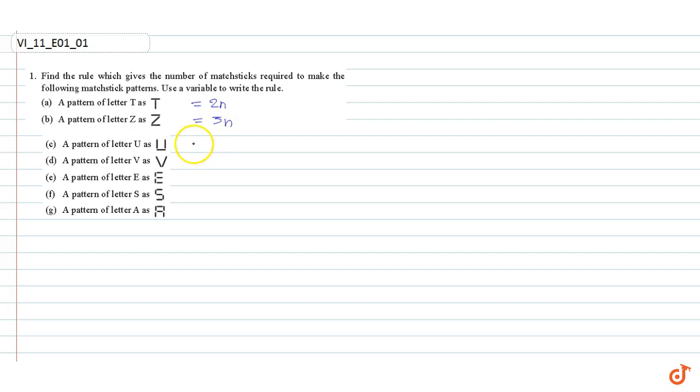It takes three matchsticks to make U, so it is equal to 3n. It takes two matchsticks to make B, so it is 2n.